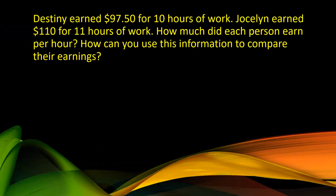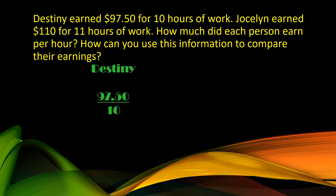Destiny earned $97.50 for 10 hours of work. Jocelyn earned $110 for 11 hours of work. How much did each person earn per hour? How can you use this information to compare their earnings? For Destiny, I put it as a fraction: $97.50 over 10. For Jocelyn, I put it as a fraction: $110 over 11.